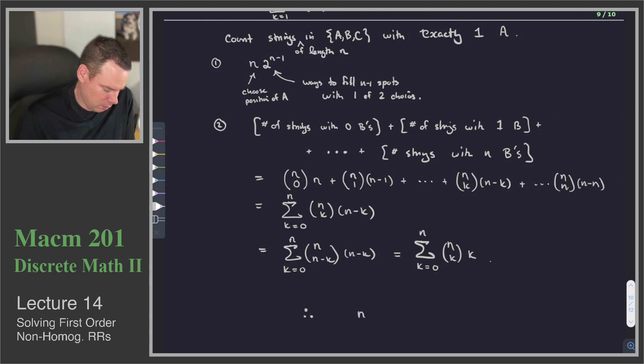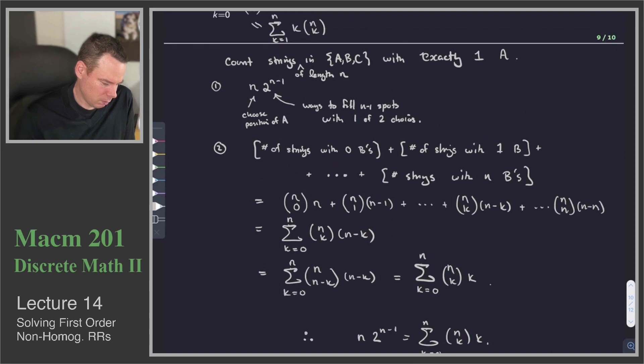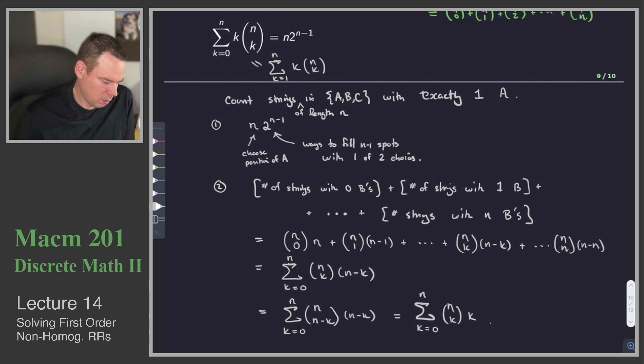So therefore n times 2 to the n minus 1 is equal to the sum k equals 0 to n of n choose k times k. There is our proof of this result.